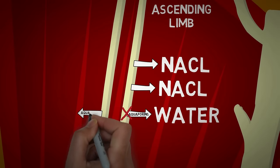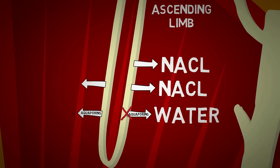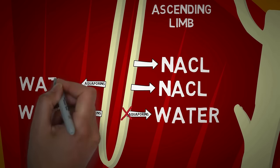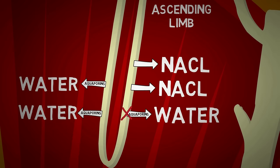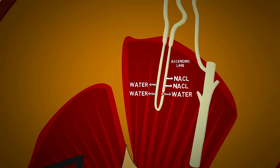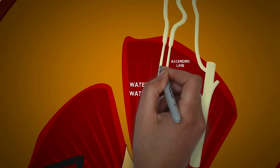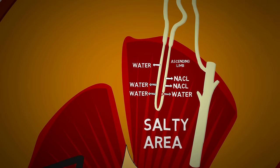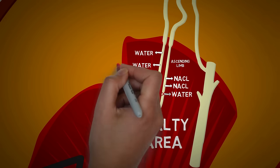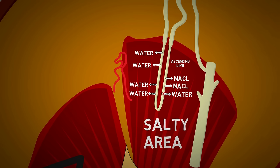The channels that allow water to move out are known as aquaporins, and these are present in the descending limb of the loop of Henle, making it freely permeable to water. Since the medulla is salty, water moves out of the descending limb into the renal medulla and eventually into blood vessels, getting reabsorbed. This is why the loop of Henle is so long — to give time for water to move out — and why it dips deep into the salty renal medulla.